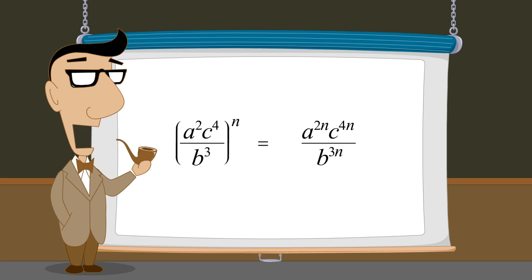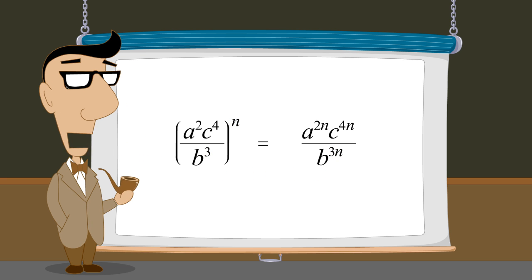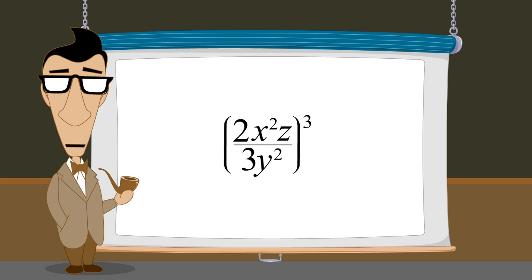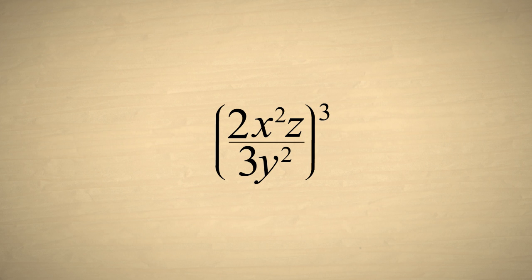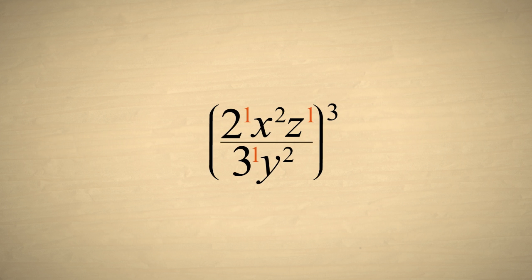Now that we know how to raise any expression consisting of multiplied and divided terms to a power, let's try writing an expression with multiplied and divided terms in its simplest form. This expression consists of a product of three terms in the numerator — two, x squared, and z — and a product of two terms in the denominator — three and y squared.